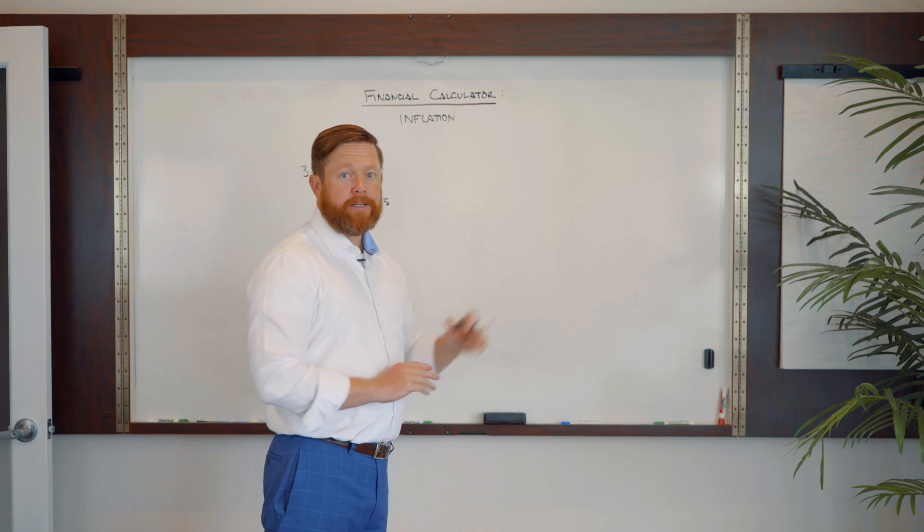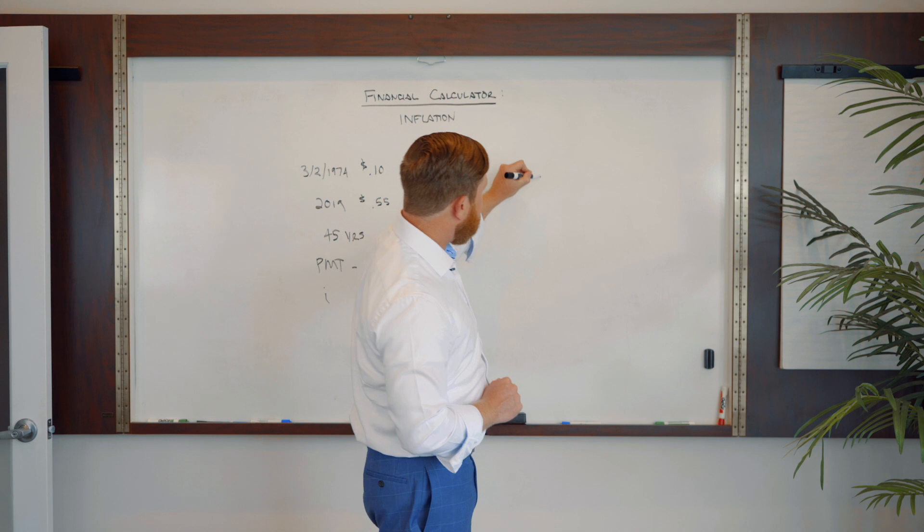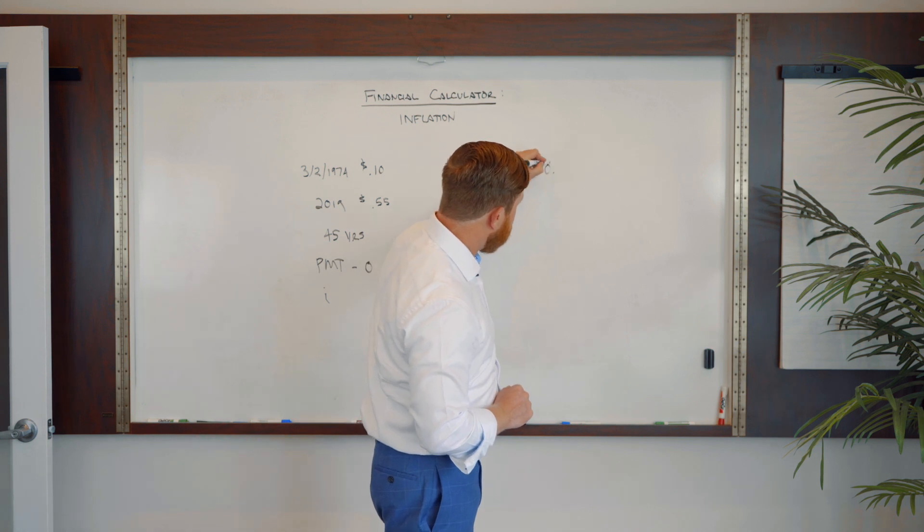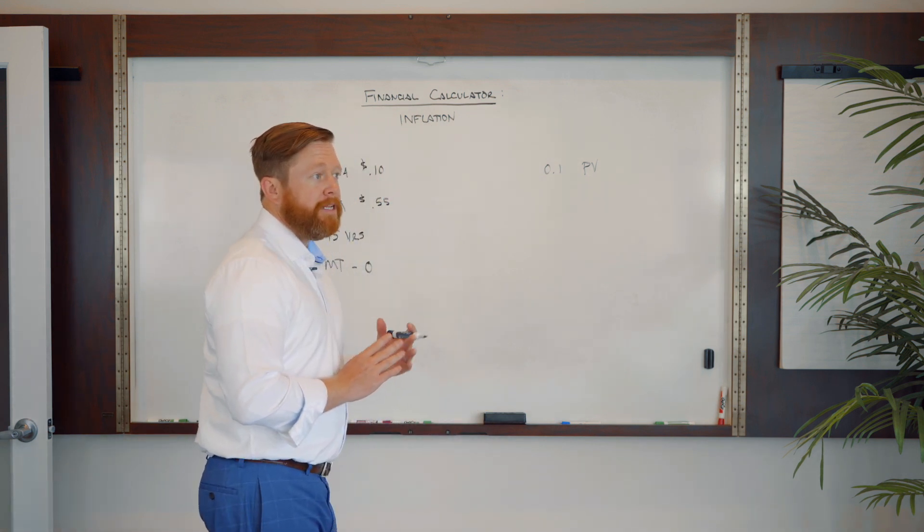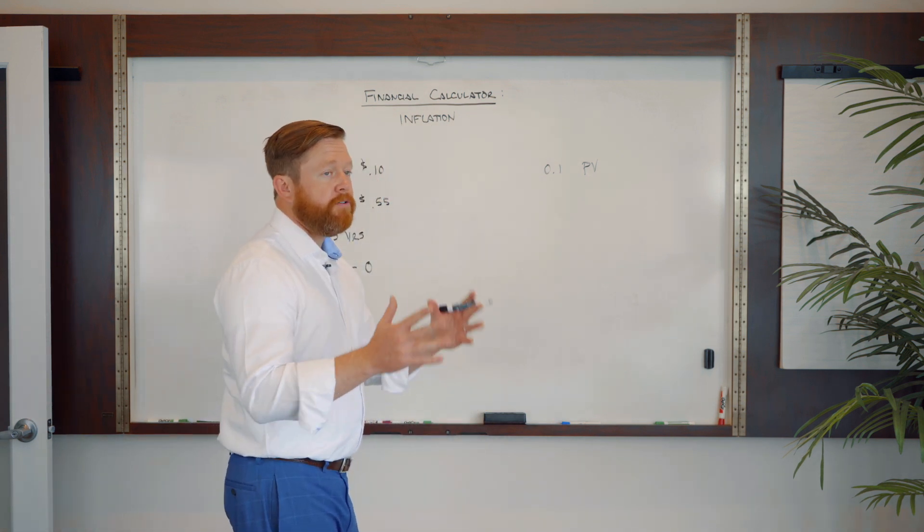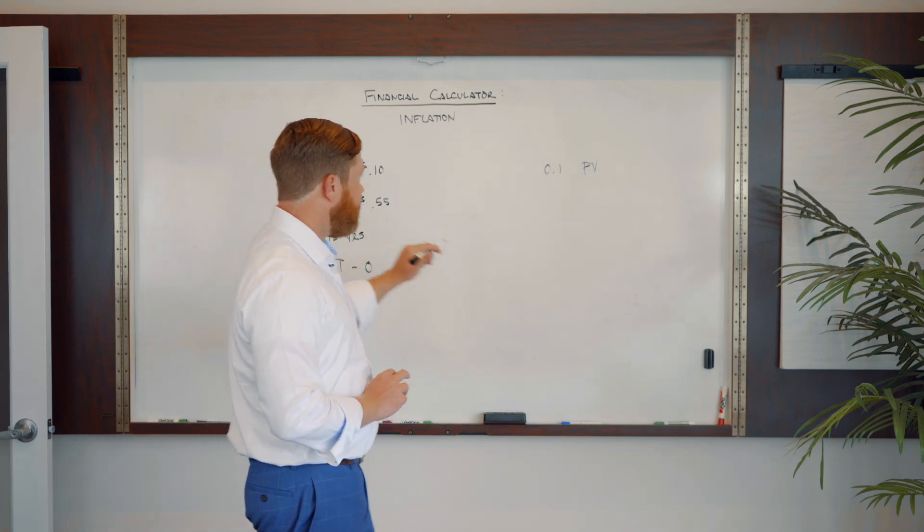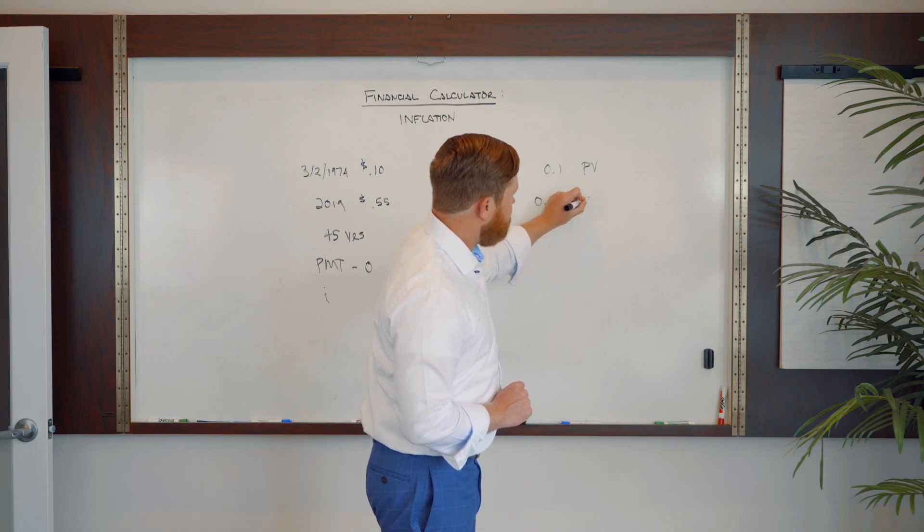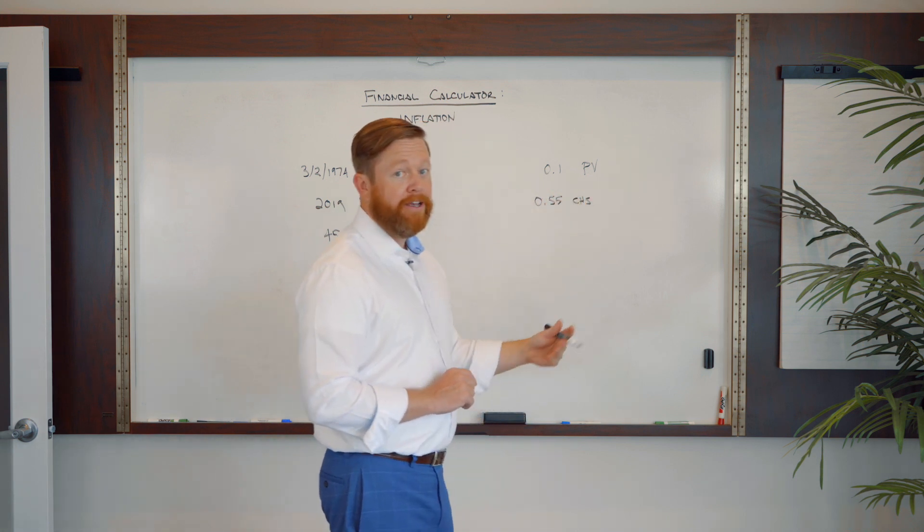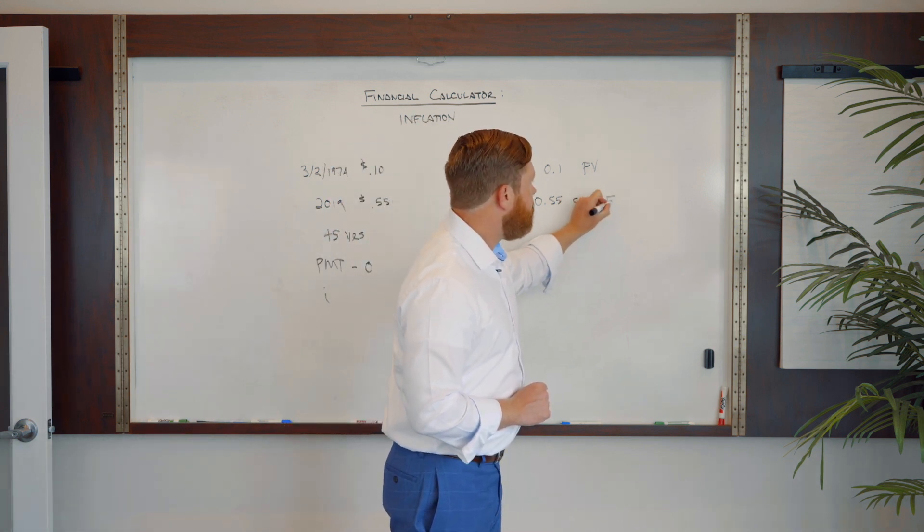When we're going to use the calculator to arrive at our answer, we're going to say that our present value is 0.1. And then something that's a little bit different here when we're looking at long-term future growth, there's a factor that you need to get a little bit more familiar with inside of financial calculators, but we won't dive into that here. We're going to do 0.55 change sign, and that's going to turn it effectively into a negative 0.55, and that will be our future value.